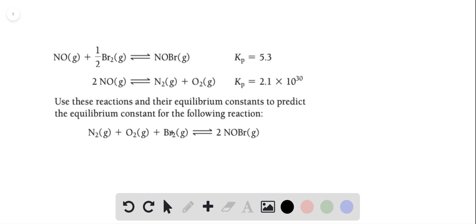But we have one Br down here, and we only have half over here. So the first thing we're going to do is multiply this reaction times two.